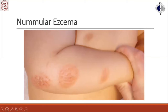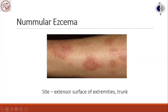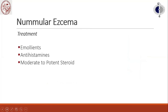Nummular eczema, also known as discoid eczema, presents as discrete coin-shaped lesions that are intensely pruritic. It is associated with atopic dermatitis, emotional stress, and dry skin in children. Lesions are usually found on the extensor surfaces of the extremities and trunk. Treatment is emollients, antihistamines, and moderate to potent steroids.